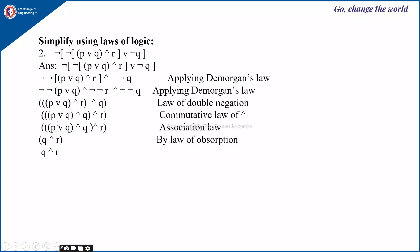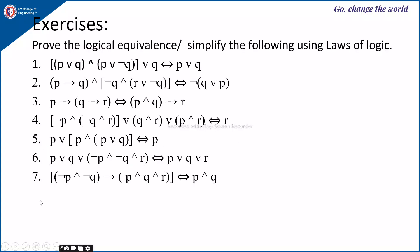After rearranging, we get (P∨Q) ∧ Q ∧ R. Applying the associative law and then the absorption law to (P∨Q)∧Q, we get Q. So the final simplified answer is Q∧R. Likewise, you can take down these questions for simplifying using the laws of logic.